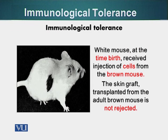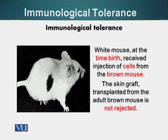Here is a white mouse. At the time of birth, it received an injection of cells from a brown mouse. At a later stage, a skin graft from a brown mouse was transplanted onto this white mouse, and there was no immune rejection. This transplant was tolerated because since the cells from the brown mouse were present early on at the embryonic stage or right after birth, the immune system recognized those cells as self-cells, so any tissue from that particular mouse will be accepted by this white mouse.